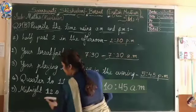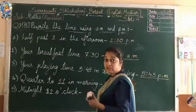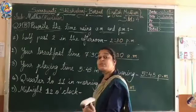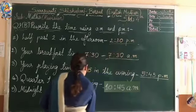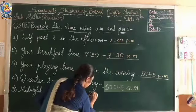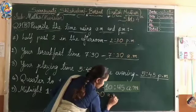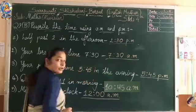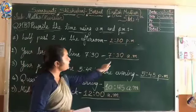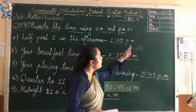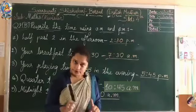Last one: midnight 12 o'clock. As I said, from midnight 12 o'clock AM starts and the next day begins. So here we write 12 AM. This is question number 2 — you have to write the time and then AM or PM; don't write only AM or PM without the time.